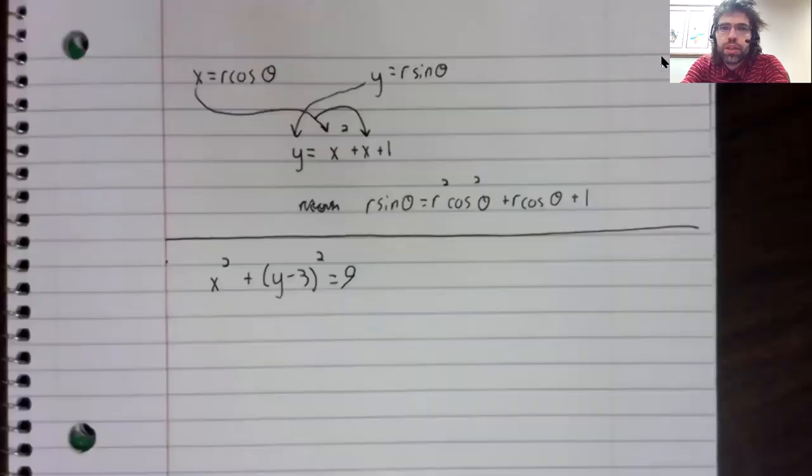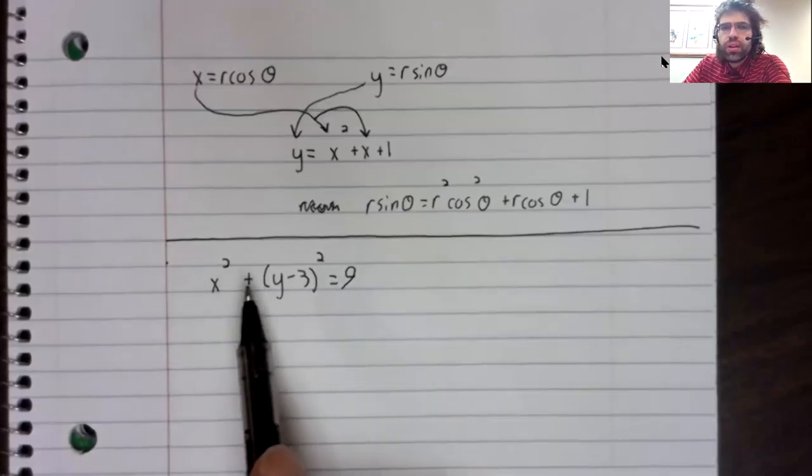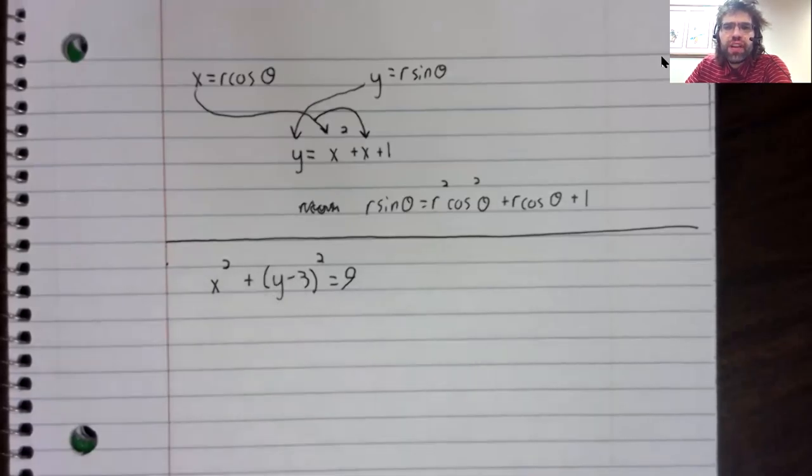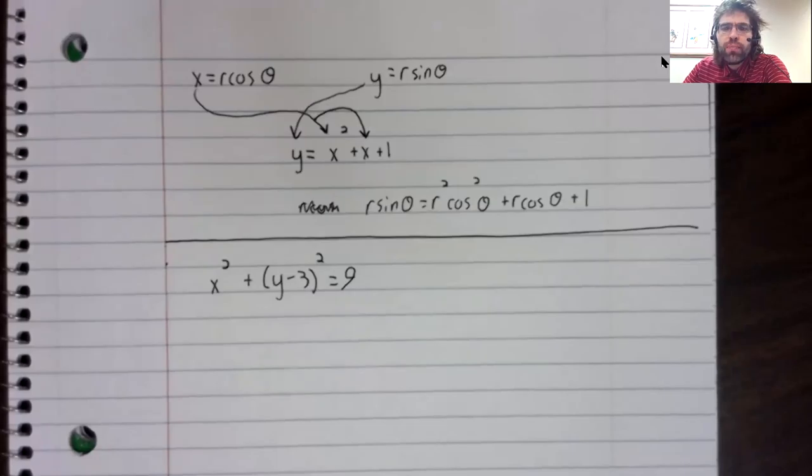We might expect to have better luck with something like this. This is the equation of a circle, and in polar coordinates, circles are pretty basic things. I mean, the equation r equals k corresponds to a circle of radius k centered around the origin.